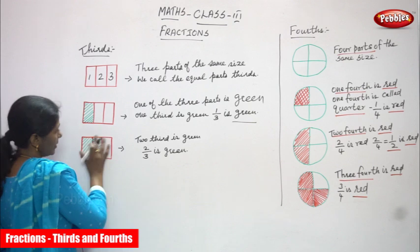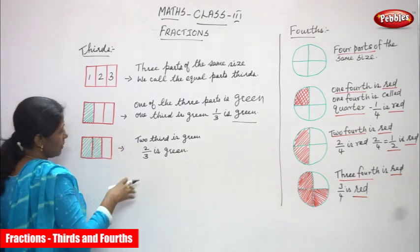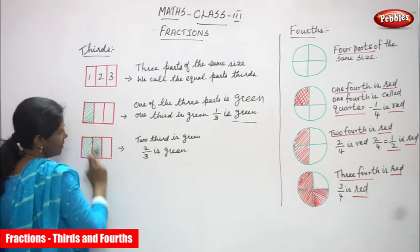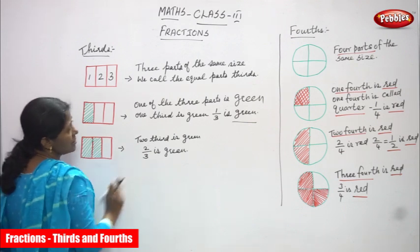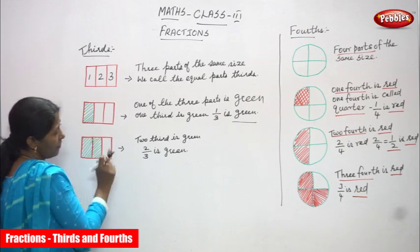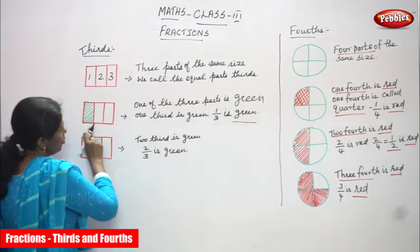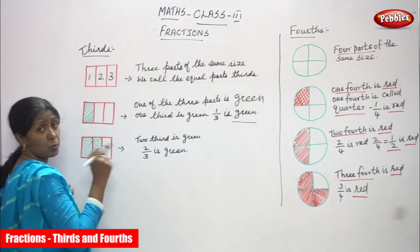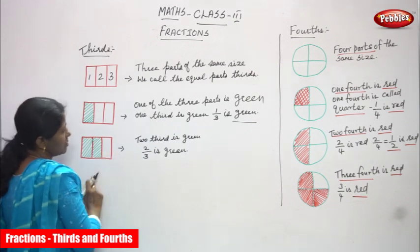Look at the same object. I have already cut it into three equal parts. First I shaded only one part in green color. Now I shaded two parts in green color. So two thirds — altogether three parts. First I shaded only one part; now I shaded two parts. So two thirds is green.